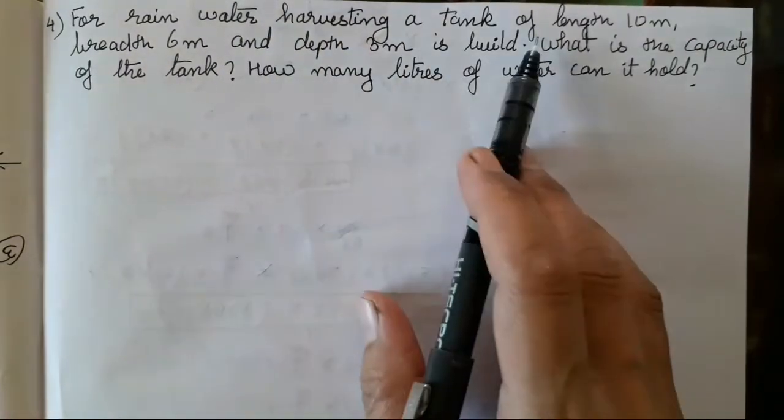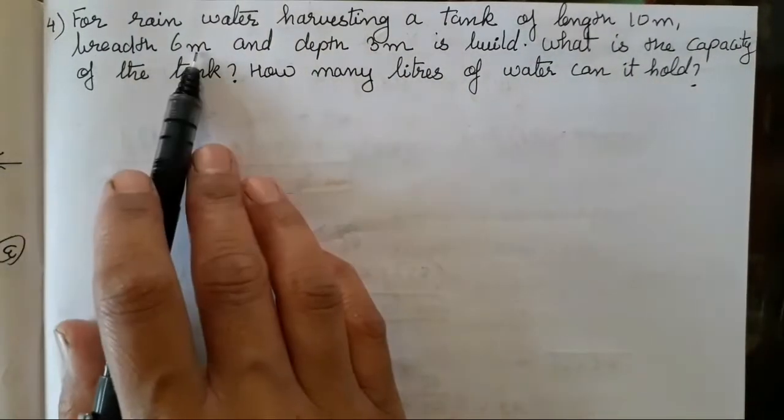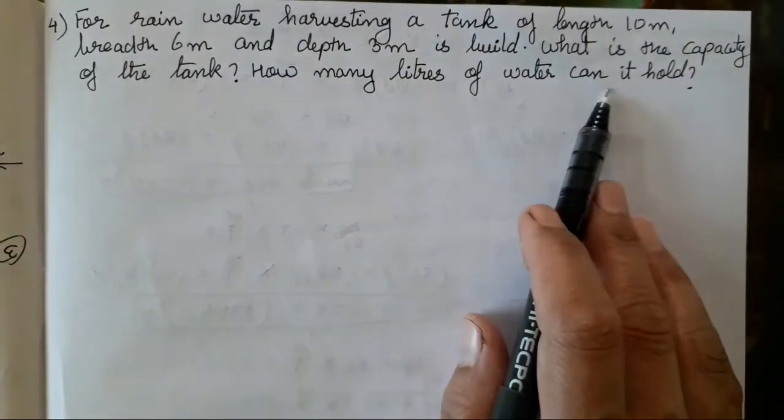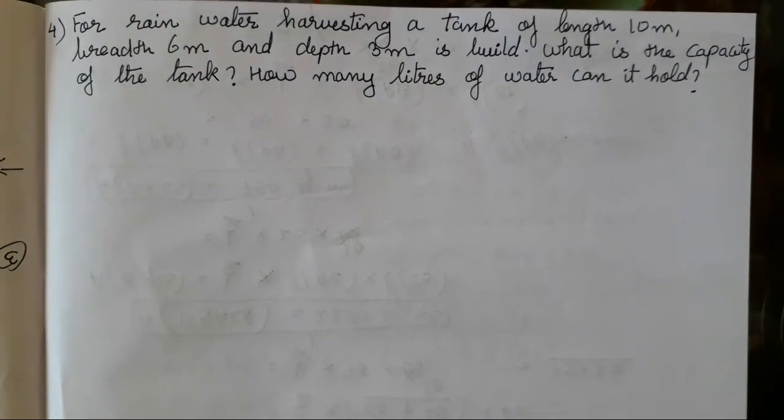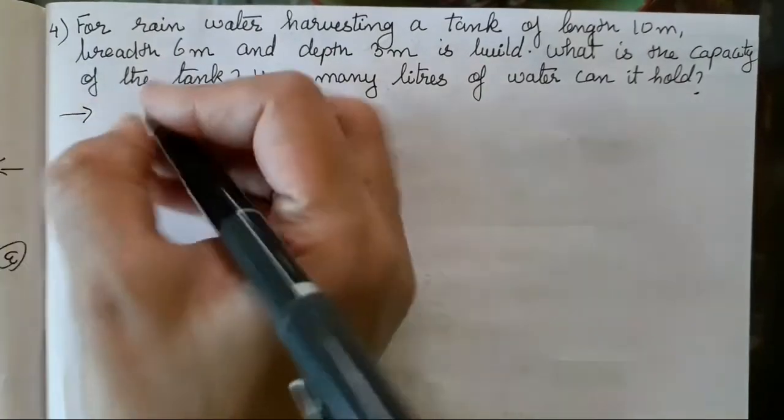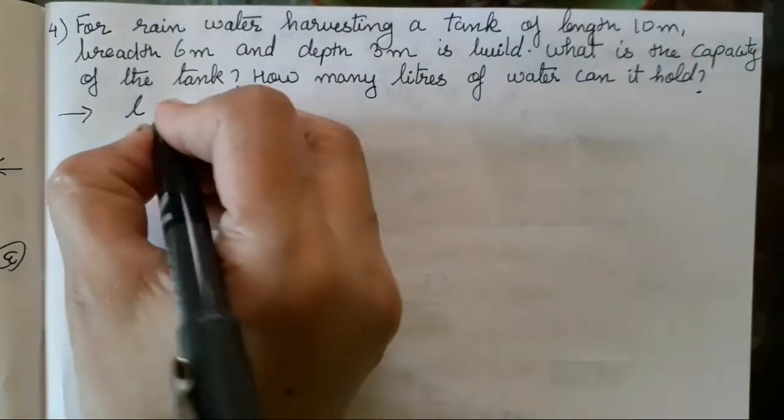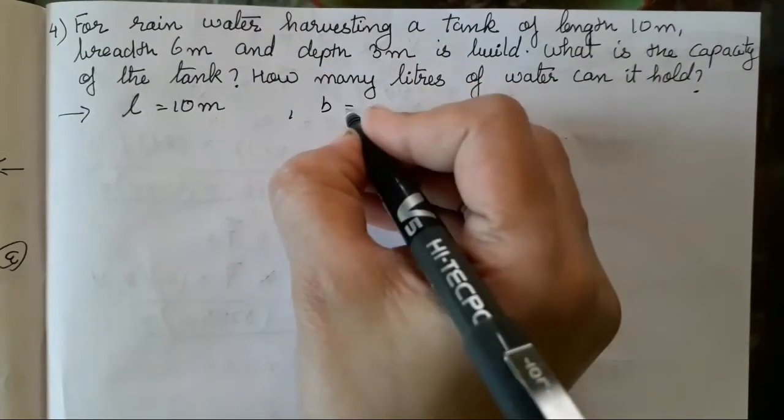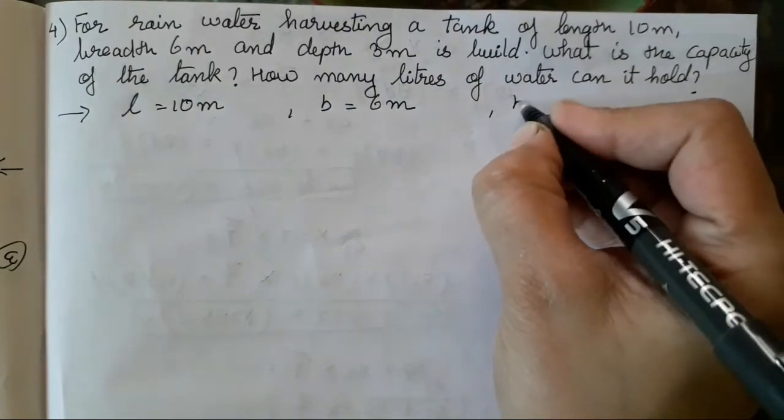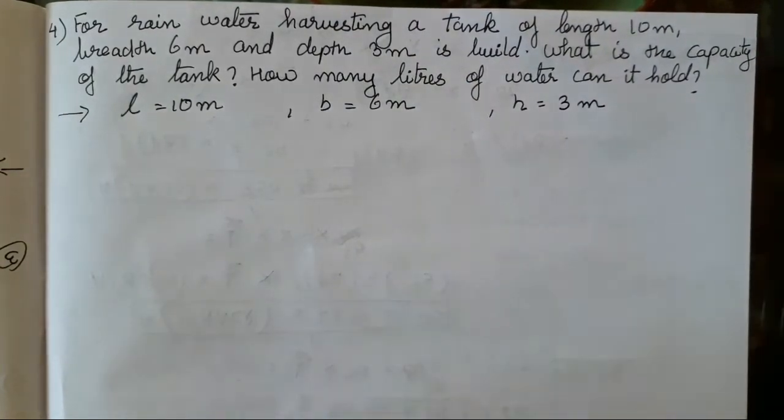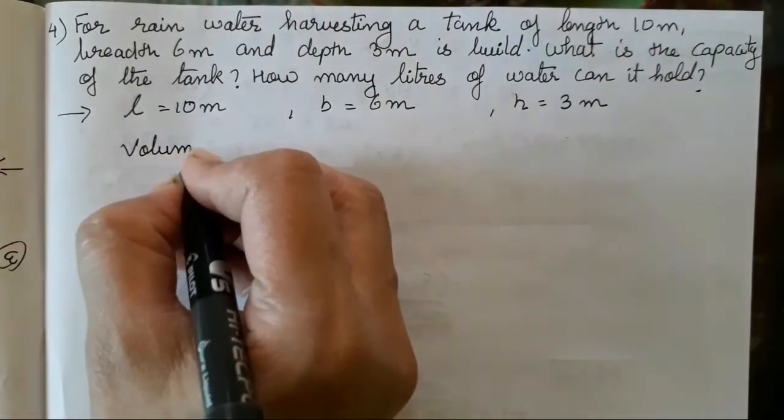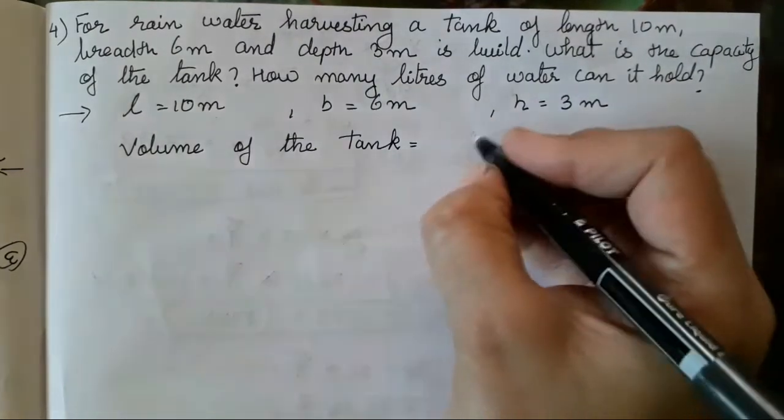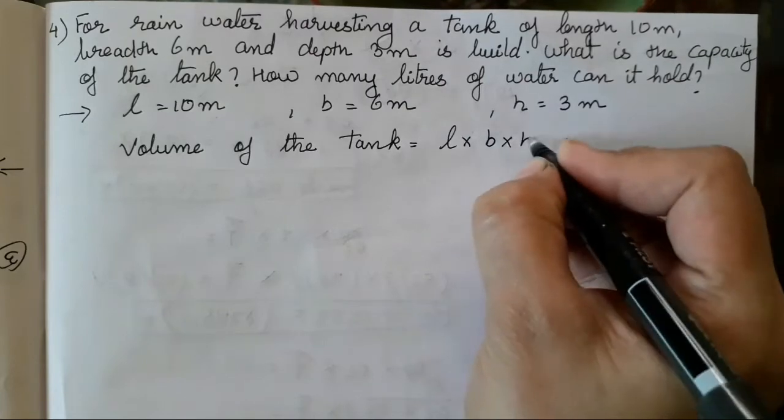Let's solve the fourth question. For rainwater harvesting, a tank of length 10 meter, breadth 6 meter and depth 3 meter is built. What is the capacity of the tank? How many liters of water can it hold? We have to find the volume. Length of the tank L is 10 meters, breadth B is 6 meters, height H is 3 meters.